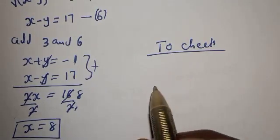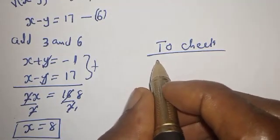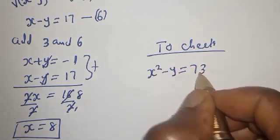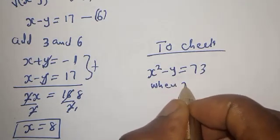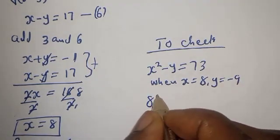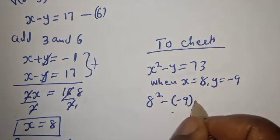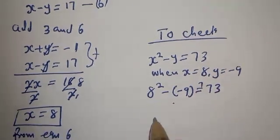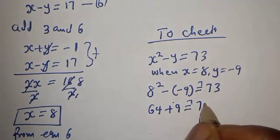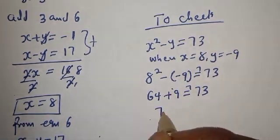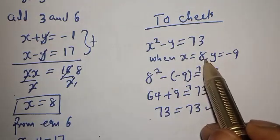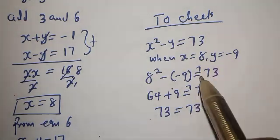Let's check to confirm our answer. Using equation 1: x squared minus y equals 73. When x is equal to 8 and y is equal to minus 9, we get 8 squared minus (minus 9), which is 64 plus 9, equal to 73. This satisfies the given equation at x equal to 8 and y equal to minus 9. Thank you for watching — don't forget to like, share, comment, and subscribe to my channel.